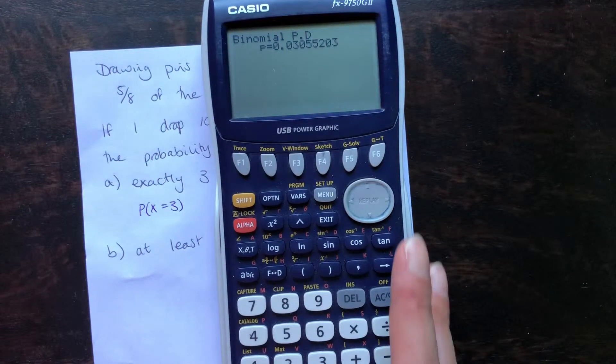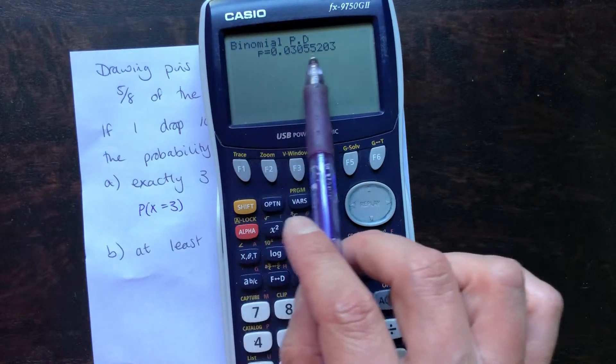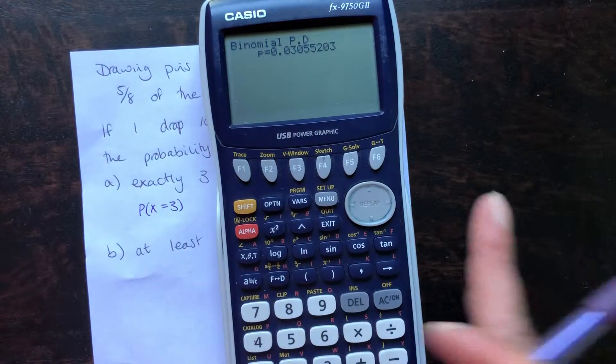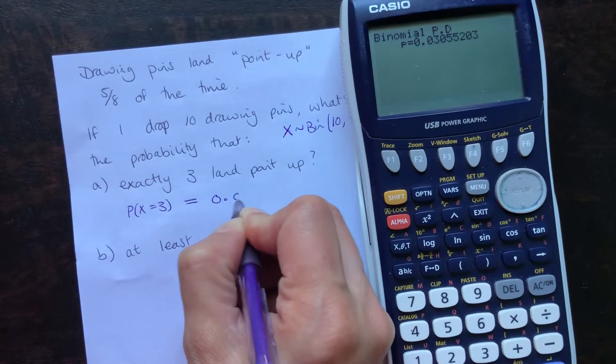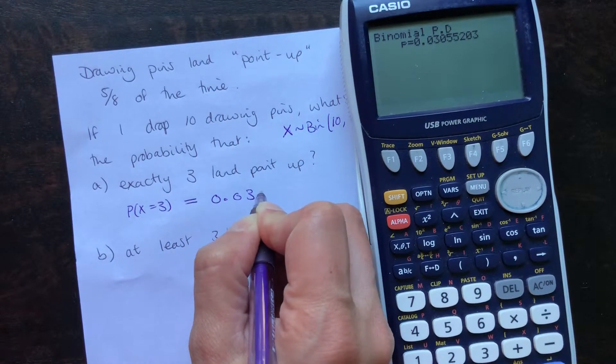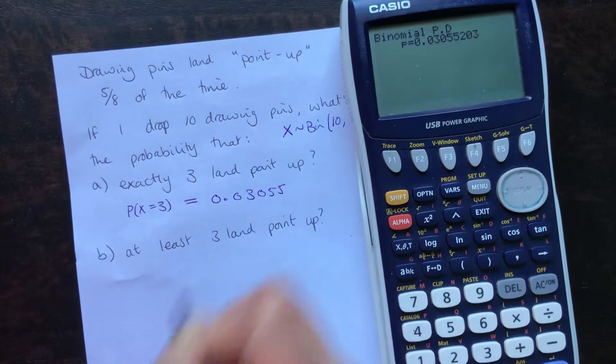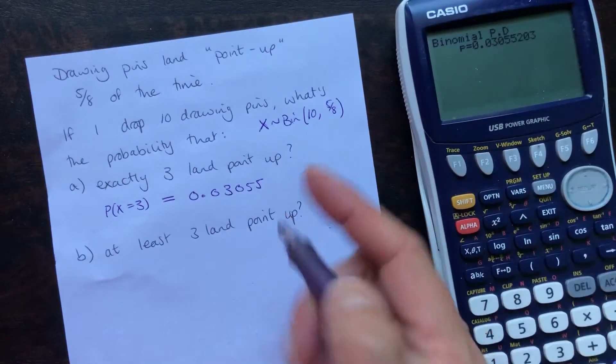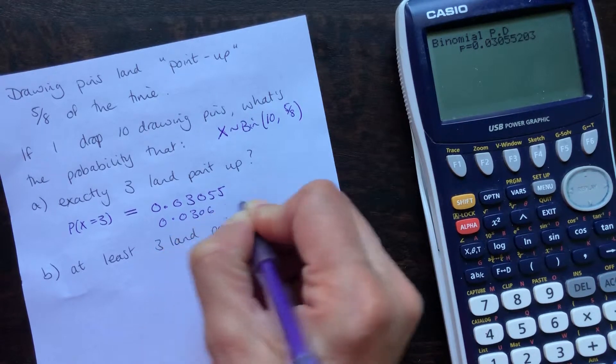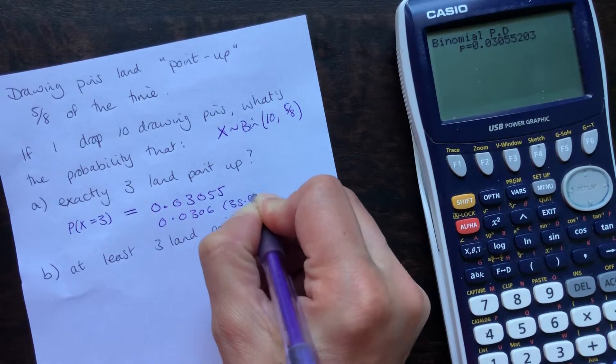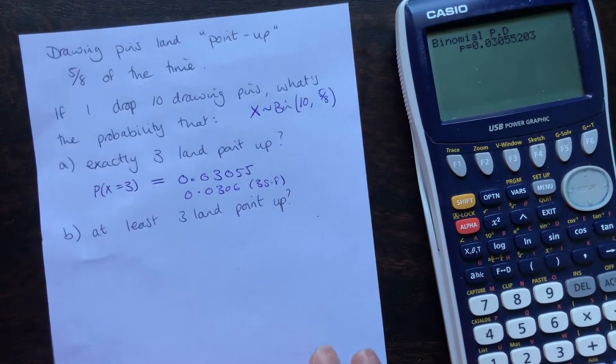One more press of your execute button will tell you what that probability comes to. This probability here equals 0.03055. If you want to do it to three significant figures, that would be 0.0306.